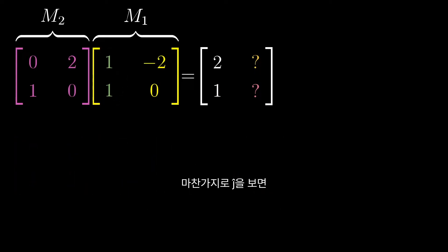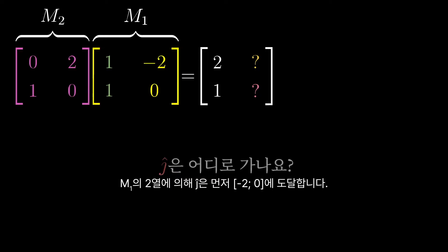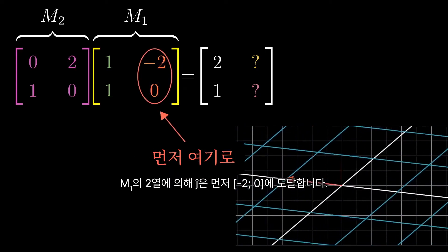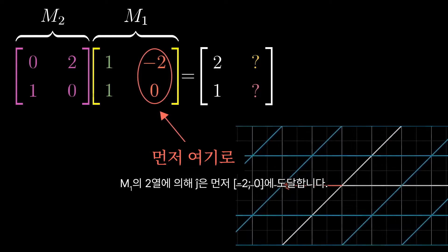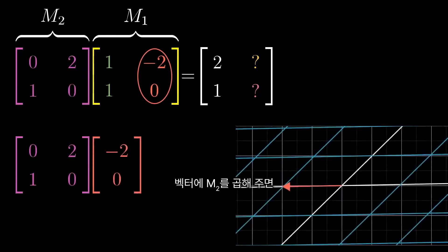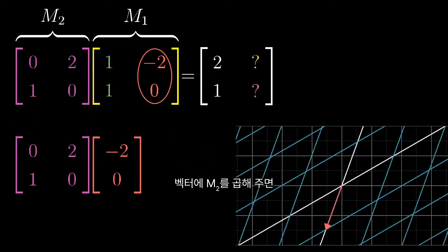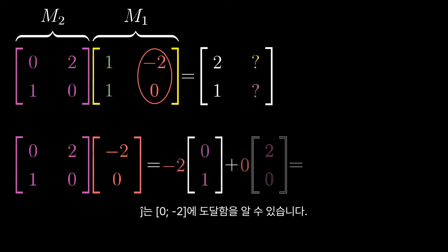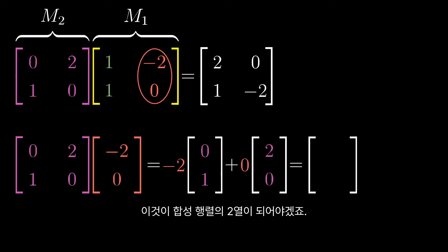Likewise, to follow j-hat, the second column of M1 tells us where it first lands. Then when we apply M2 to that vector, you can work out the matrix-vector product to get another vector, which becomes the second column of our composition matrix.